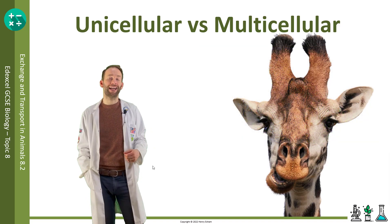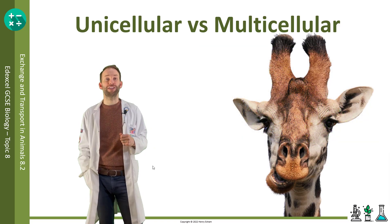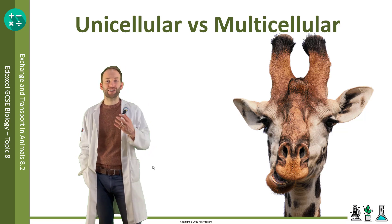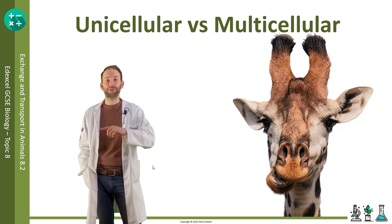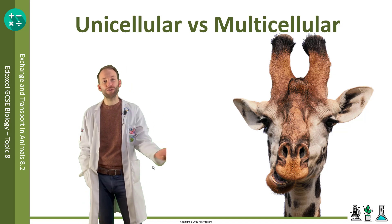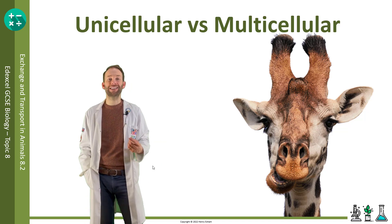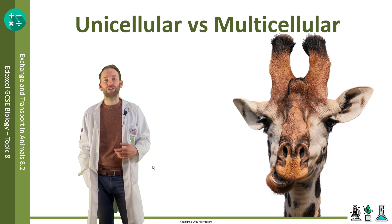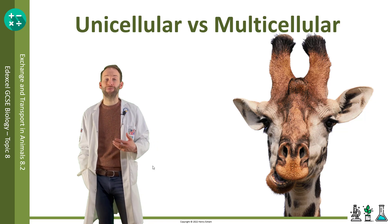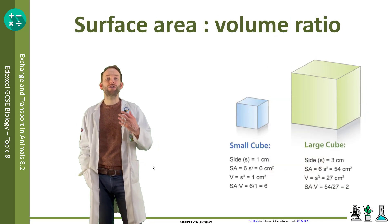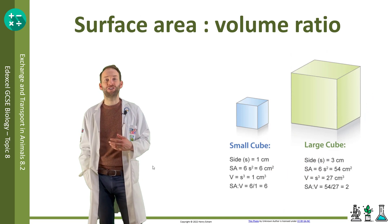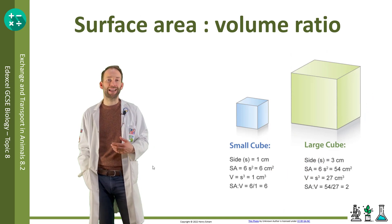Multicellular organisms, on the other hand, need an exchange surface because they need to get enough oxygen into their bodies quickly enough, and then they need a transport system to send it around all their cells fast enough. They also have a much higher demand for oxygen because they're more active. This all comes down to something called surface area to volume ratio — a mathematical concept.